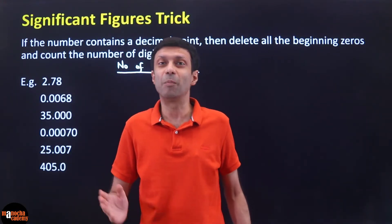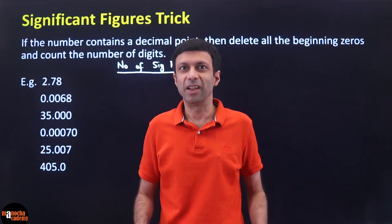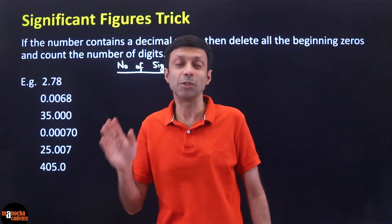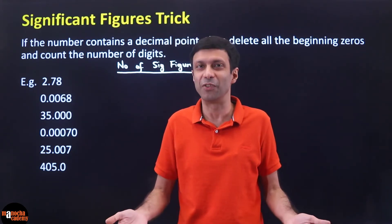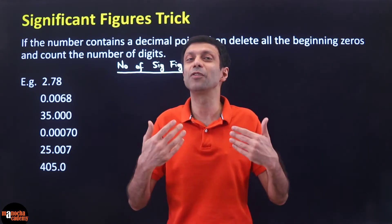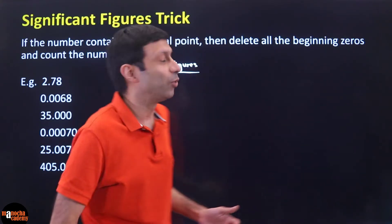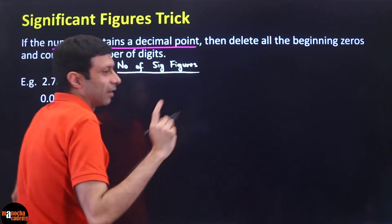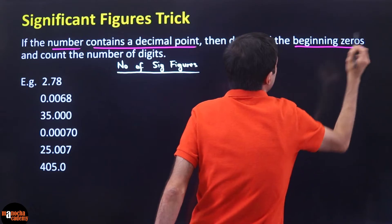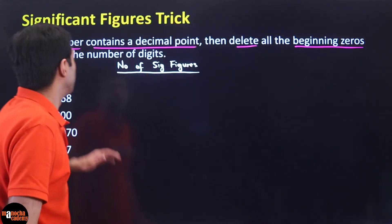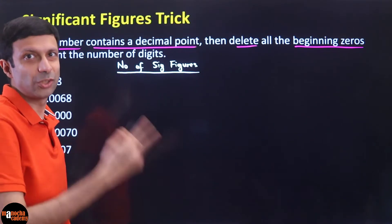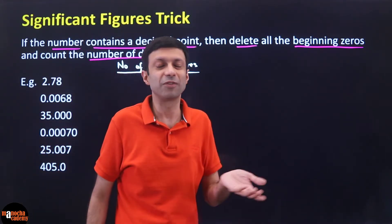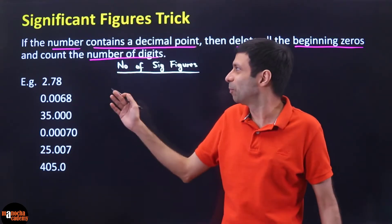If the number has a decimal point, then delete all the beginning zeros — that is, all zeros before the first non-zero digit — and count the number of digits. That will give you the number of significant figures.